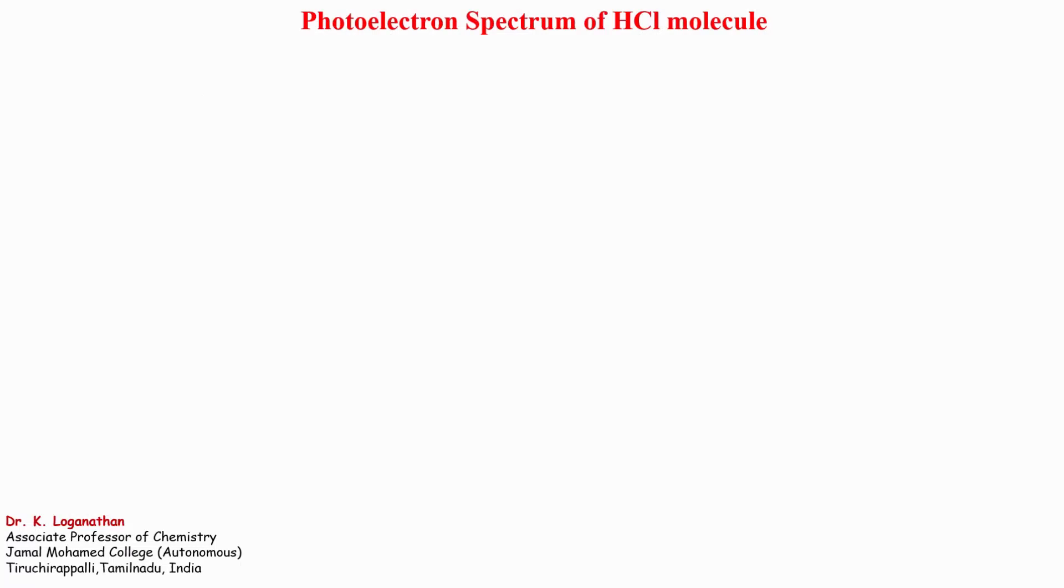Photoelectron spectrum of hydrochloric acid molecule. This is the molecular orbital diagram of hydrochloric acid. The electronic configuration is 4σ², 5σ², 2π⁴.